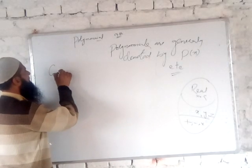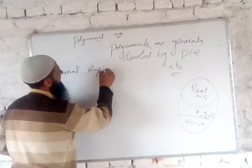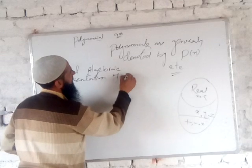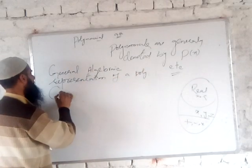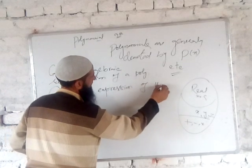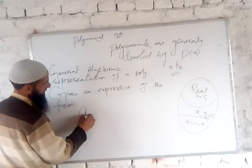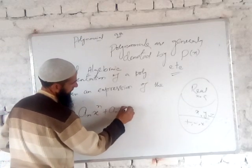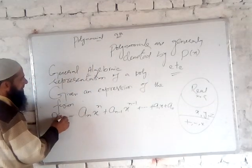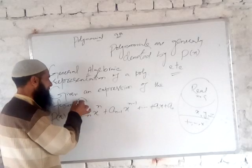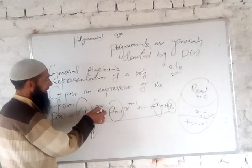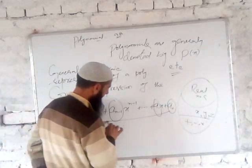Now we discuss the general algebraic representation of a polynomial. Given an expression of the form: aₙxⁿ + aₙ₋₁xⁿ⁻¹ + ... + a₁x + a₀. This is the general algebraic representation of a polynomial, where aₙ, aₙ₋₁, ..., a₁, and a₀ are all real numbers, x is the variable, and n is a non-negative integer.